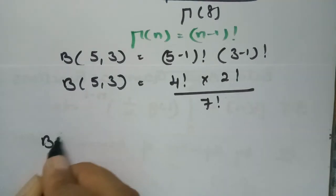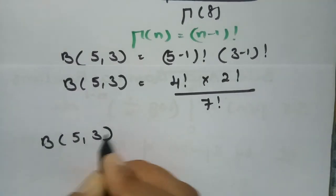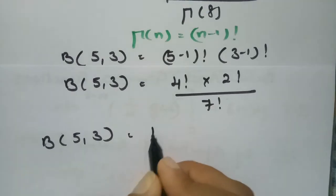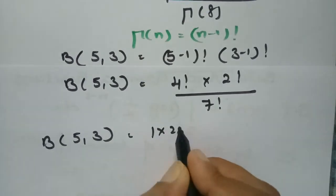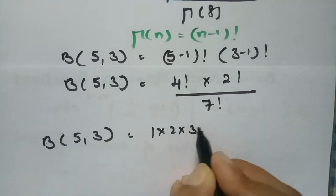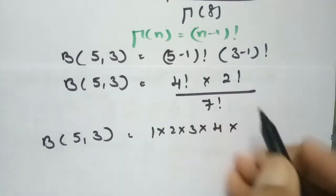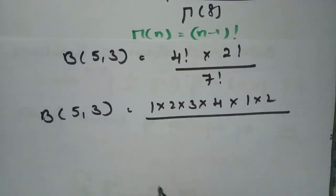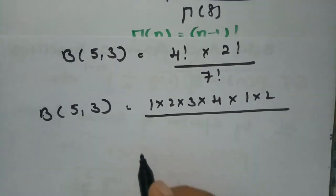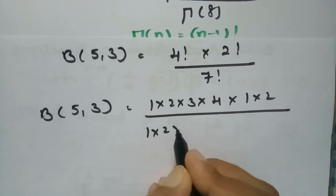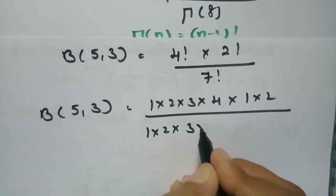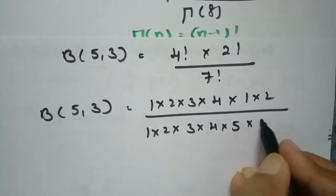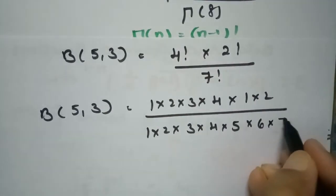So 4 factorial is 1 into 2 into 3 into 4, and 2 factorial is 1 into 2, and 7 factorial is 1 into 2 into 3 into 4 into 5 into 6 into 7.